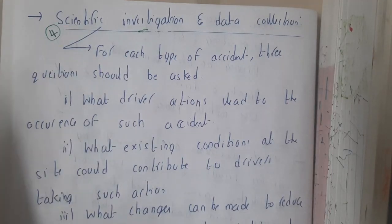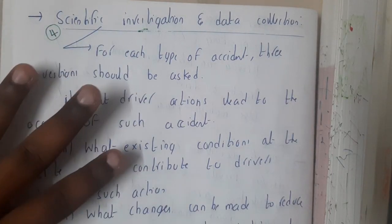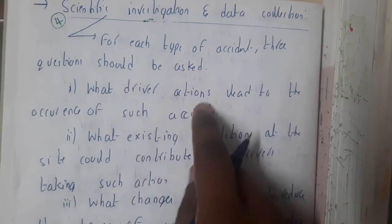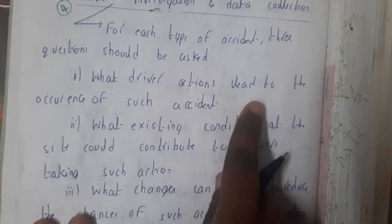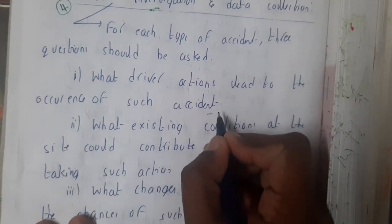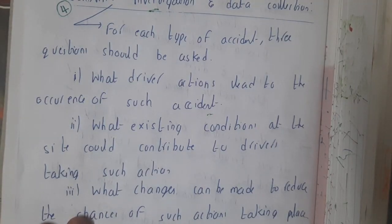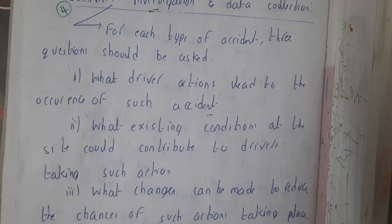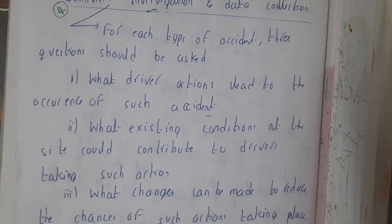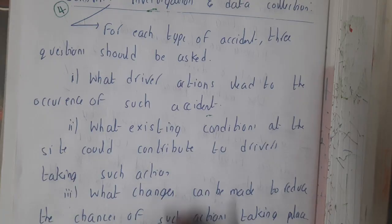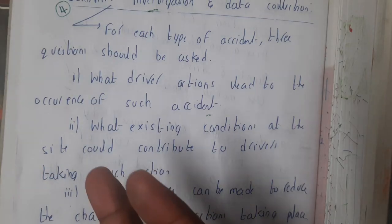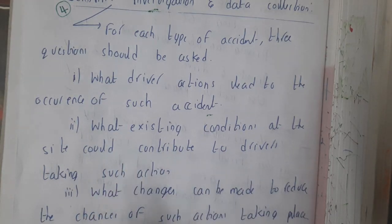We will be asking three popular questions for each type of accident. The first question is: what driver action led to the occurrence of the accident? Basically, the driver is the main role in an accident — he is the guy who is controlling the vehicle and who may have caused it.